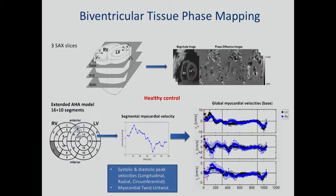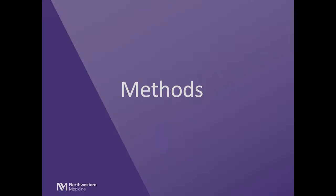The sequence is performed in a three-slice fashion — base, mid, and apex — and we obtain magnitude and phase difference images. From these we extract global and segmental velocities, with segmental velocities reported using the 16-plus-10 segment AHA model for all segments of the right and left ventricle in systole and diastole.